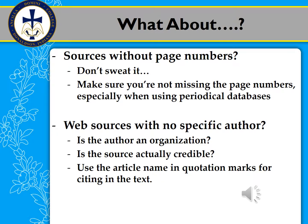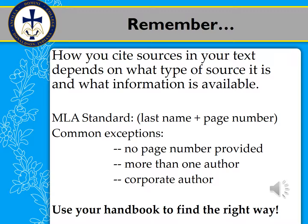On occasion, if you find something you want to use and feel it's appropriate for your paper but there's absolutely no author, what you do is use the article name in quotation marks in place of the author's name, and put that in parentheses after the use of the source so it is documented. When you get to your Works Cited page in MLA, that is how the listing would start — with the article name. Remember, how you cite your sources in your text depends on what type of source it is and what information is available. Sometimes the page number is not available, sometimes you'll have more than one author, sometimes a corporate author — there are many variables, and you'll want to use your handbook to find the right approach.